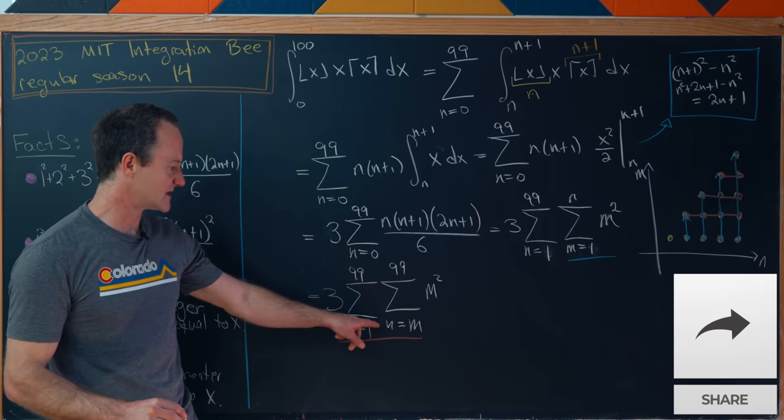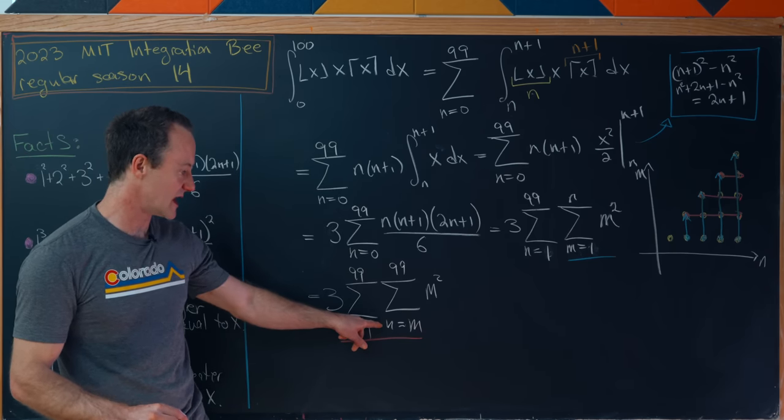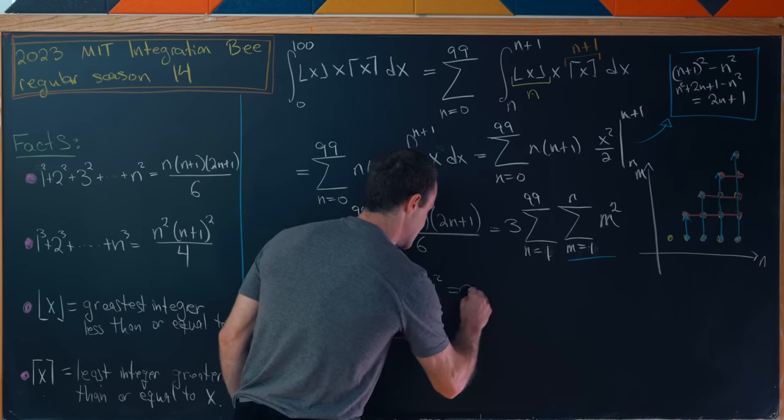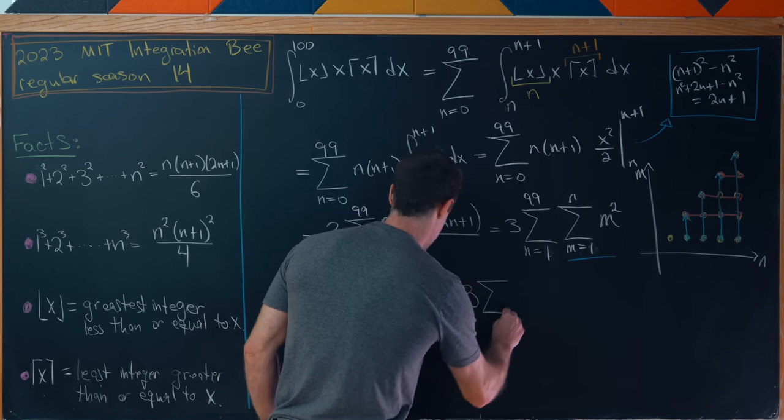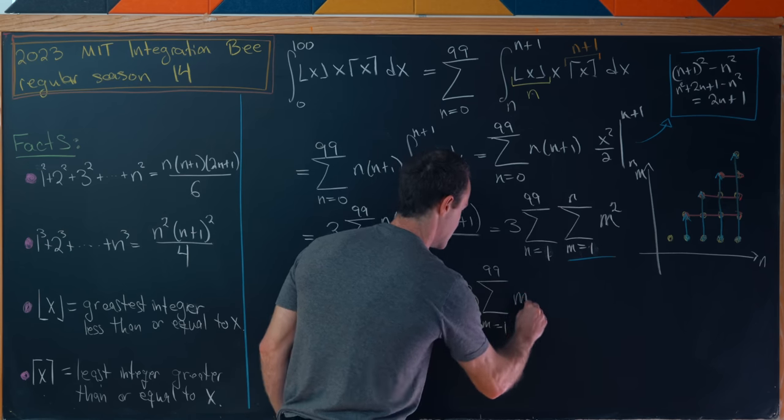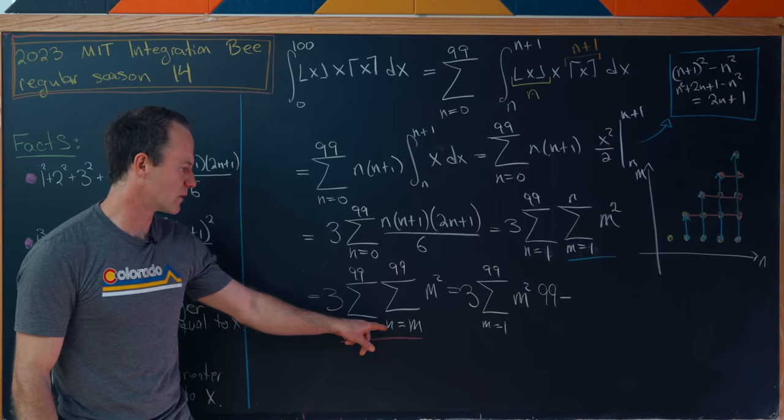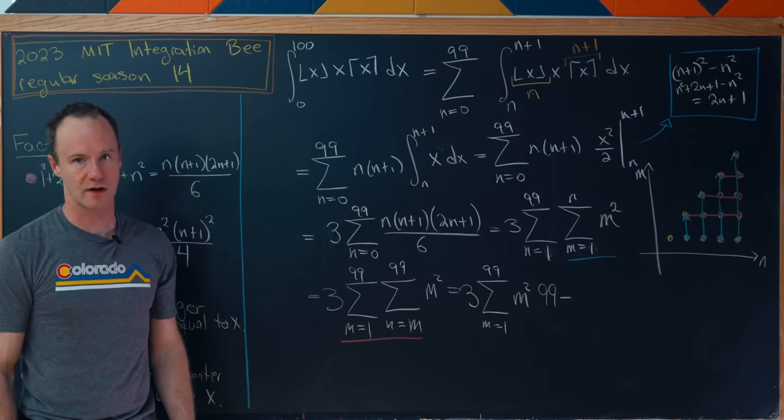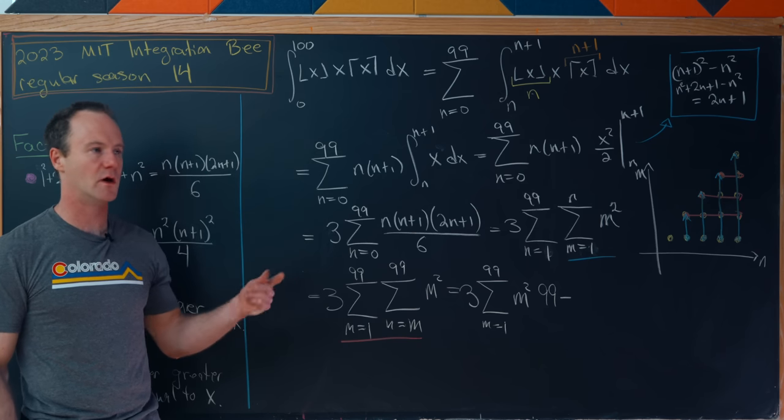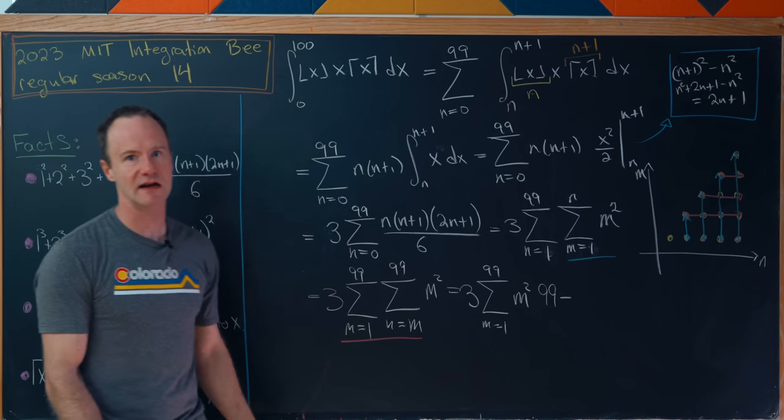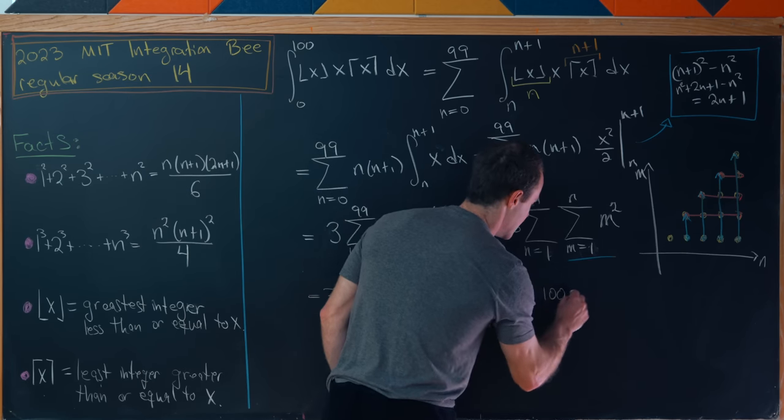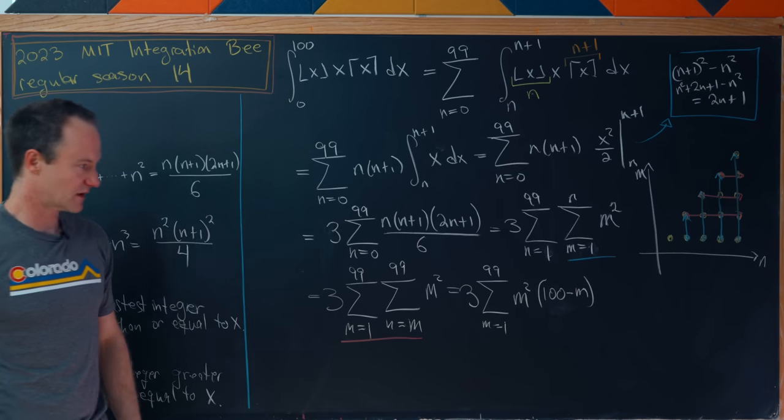But now let's notice that this inner sum only depends on n. m is like a constant. So that means this inner sum is quite easy here. This is going to be 3, and then the sum as m goes from 1 to 99 of m squared, and then 99 minus m plus 1 because that's how many numbers there are here. You take the numbers from m to 99, but that counts the bottom one as the zeroth one. So that would be 99 minus m plus 1, in other words 100 minus m.